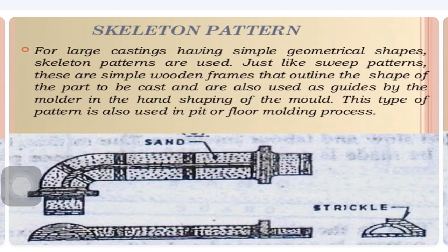Next is the skeleton pattern, used for large castings having a simple geometrical shape — for example, a very large pipe. Even though the size is large, the geometrical shape is simple. Skeleton patterns are used similarly to sweep patterns. They are simple frames made from wood that outline the shape of the part to be cast, and are used to guide the molder in hand-shaping the mould. This type of pattern is also used in pit or floor molding processes.